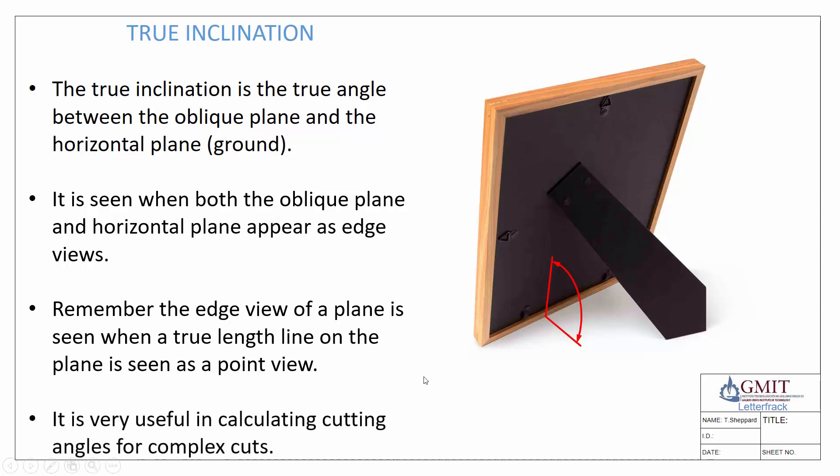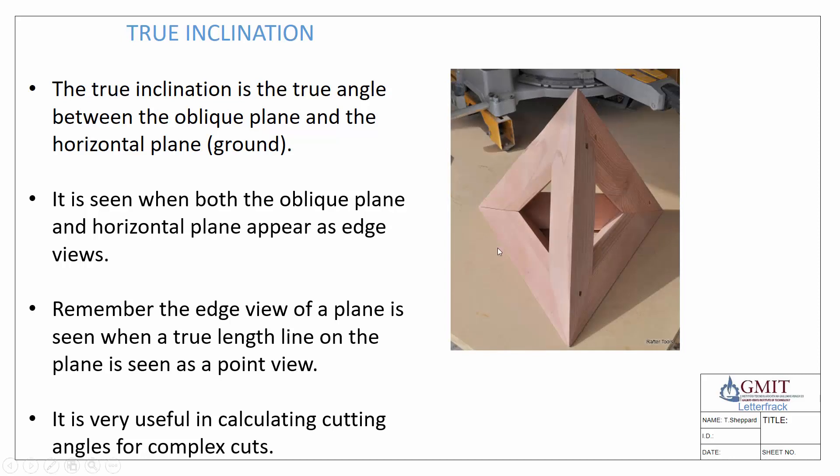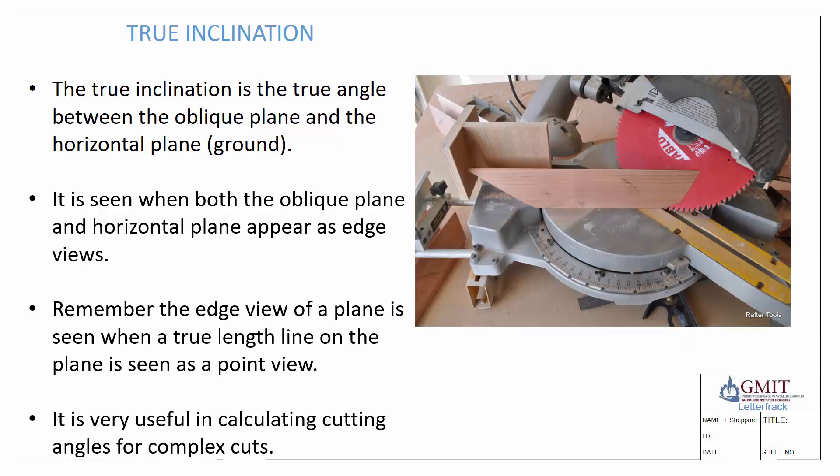We're going to use that fact to help locate the edge of our plane. Where might this be used? It's actually very useful when calculating cutting angles, particularly if you're dealing with complex shapes. An example might be this pyramid here made out of timber. You can see the angles here are mitered, so that's going to require what's known as a compound or complex angle. Here we see our saw angled, and our piece is angled as well to the saw. This method is very useful for working out those.